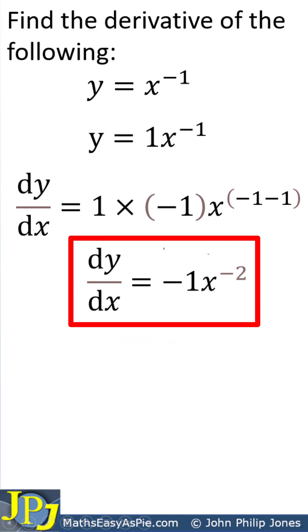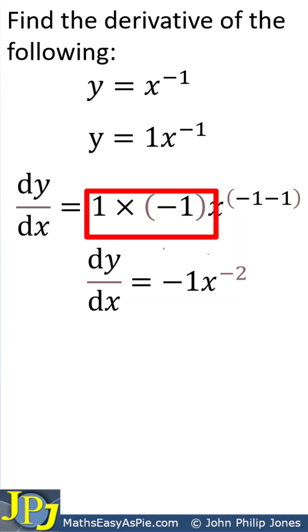The next step is shown on this line, and you can see 1 times minus 1 is minus 1. This x is written down to here, and this minus 1 minus 1 gives us minus 2.